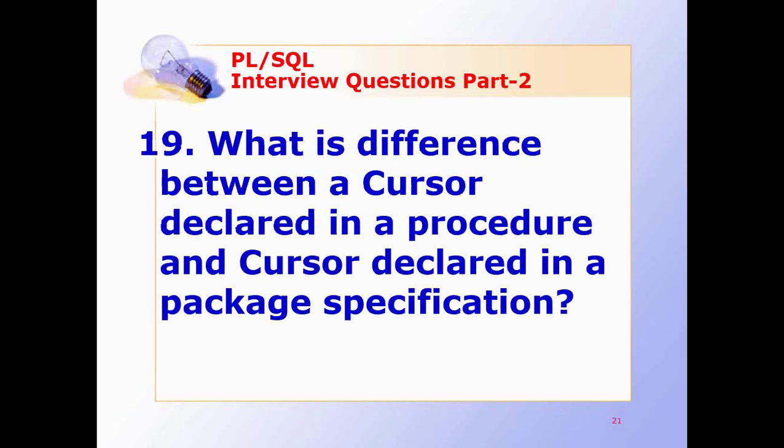What is the difference between a cursor declared in a procedure and a cursor declared in a package specification? A cursor declared in a package specification is global and can be accessed by other procedures in the package. Whereas a cursor declared in a procedure is local to that procedure and cannot be accessed by other procedures.